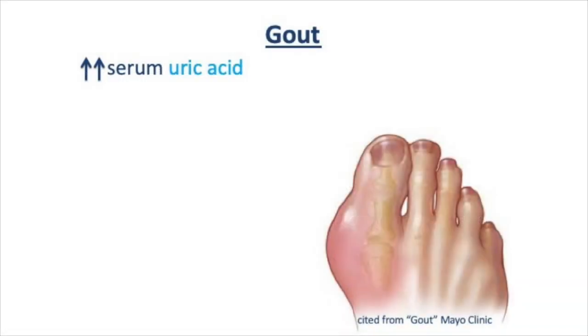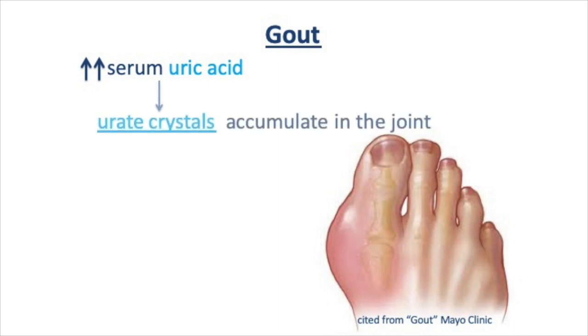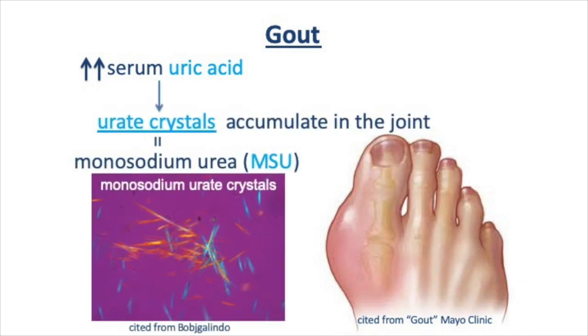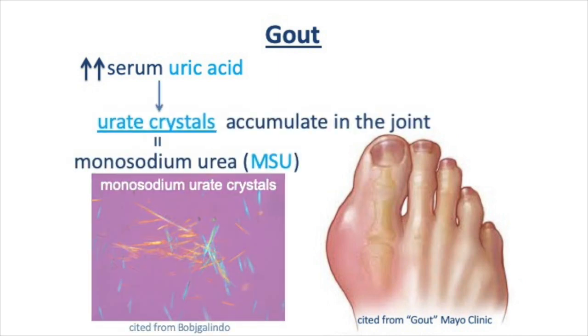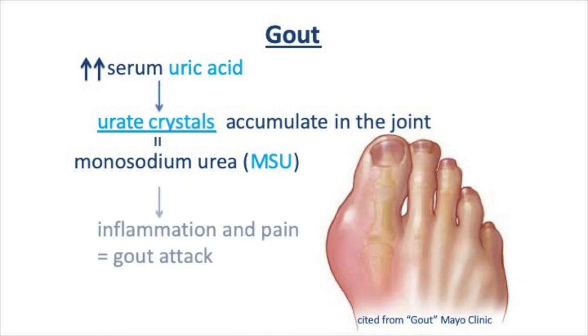Gout is an inflammatory arthritis that results from the precipitation of serum urate into crystallous deposits of monosodium urate in the joint.